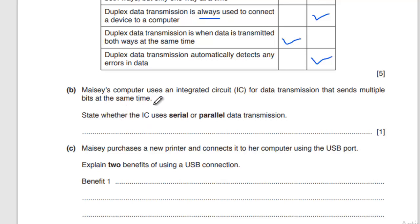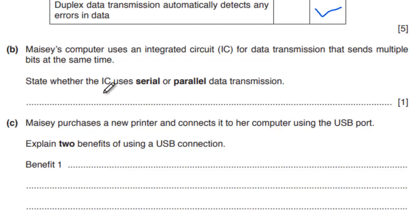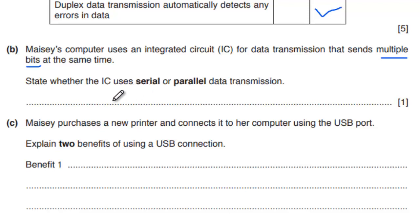Question number 9, part B. Massey's computer uses an integrated circuit (IC) for data transmission that sends multiple bits at the same time. State whether the IC uses serial or parallel data transmission. Serial data transmission uses a single line or single channel to send a single bit at a time. Parallel data transmission uses several wires and can send more data compared to serial.